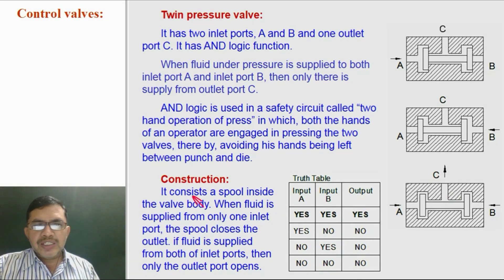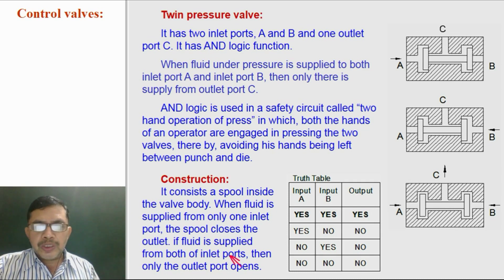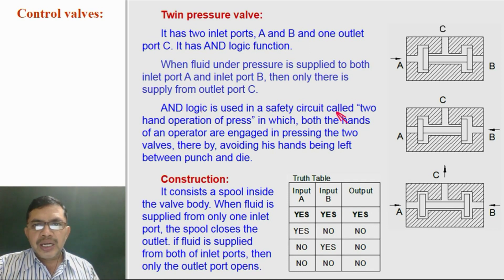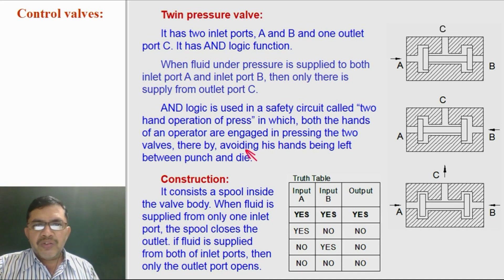Construction: the twin pressure valve consists of a spool inside the valve body. When working fluid is supplied to any one inlet port, the spool closes the outlet. If working fluid is supplied to both inlet ports together, then only the outlet port is open, so fluid flow will occur at the outlet port. AND logic is used in a safety circuit called two-hand operation of a press, in which both hands of the operator are engaged in pressing the two valves, thereby preventing his hands from being left between the punch and die.